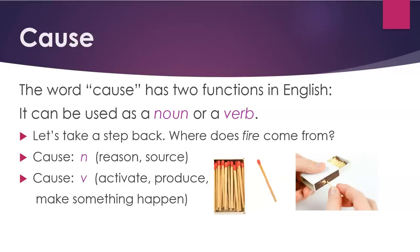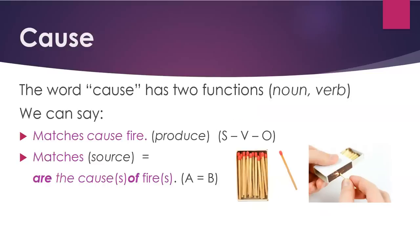The word cause has two functions in English — it can be used as a noun or a verb. Where does fire come from? We can say 'the cause,' meaning the noun, or reason, or source. Or we can say 'cause' as a verb, meaning activate, produce, make something happen. For example, we can say 'matches cause fire,' meaning matches produce fire — subject, verb, object. Or we can say 'matches are the cause of fire,' meaning matches are the source of fire. A equals B: matches equals the source or the cause.